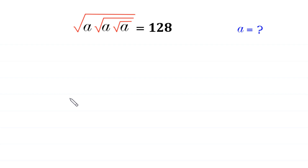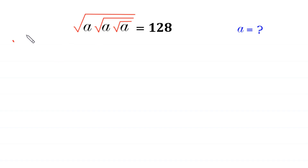Hello, welcome. We will solve this very nice radical equation: square root of a times square root of a times square root of a is equal to 128. We need to find all possible values of a. We will solve it by two methods. Let's start with method one. In this method, we take the square of both sides.